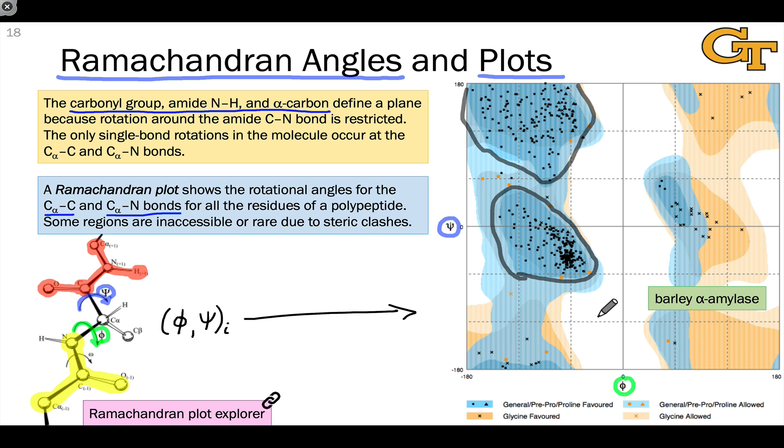This particular Ramachandran plot was generated from a crystal structure of barley alpha amylase, an enzyme in barley that breaks bonds in starches, polysaccharides, to form small disaccharides and monosaccharides.